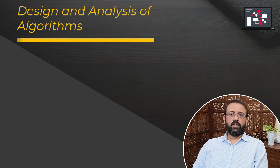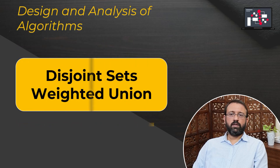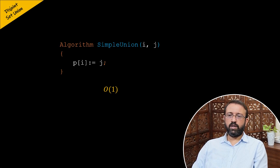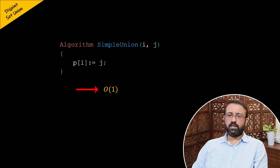Let us look at the weighted union rule that is applied to union operations on disjoint sets to make the operation efficient. Though the simple union algorithm has a time complexity of O(1), which is better time complexity, but this simple union algorithm does not perform well in certain cases.